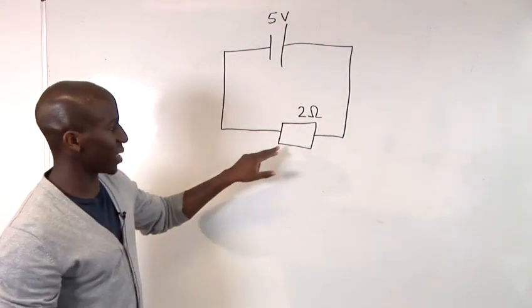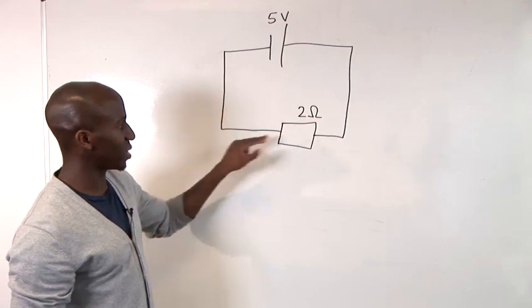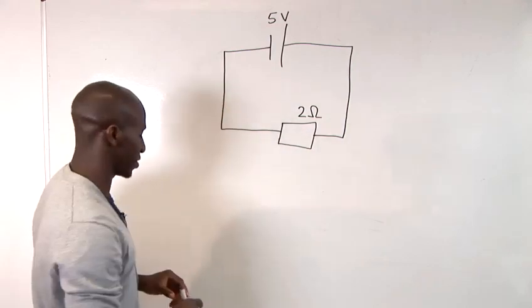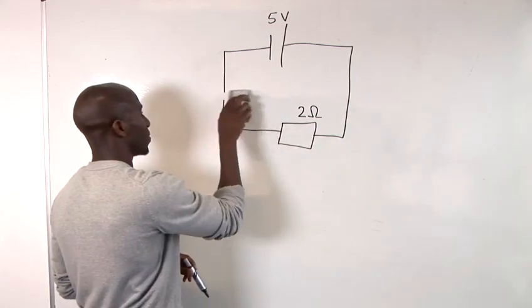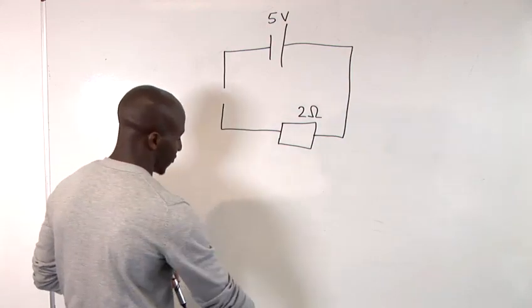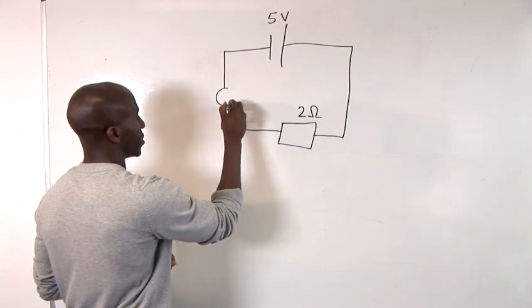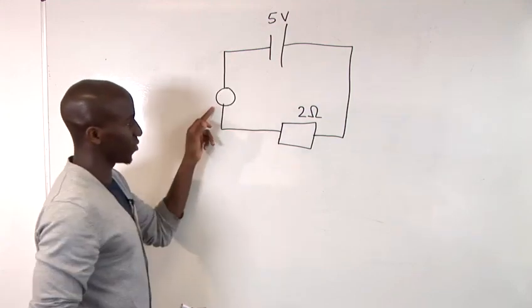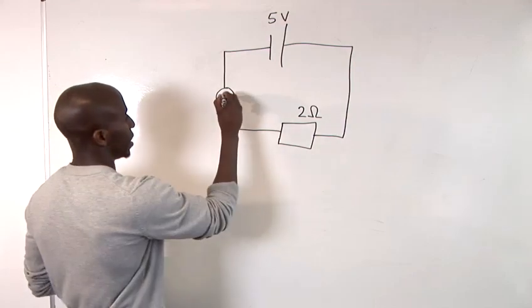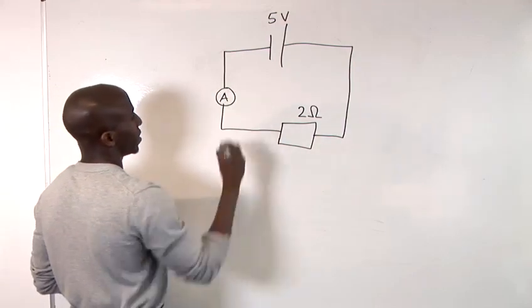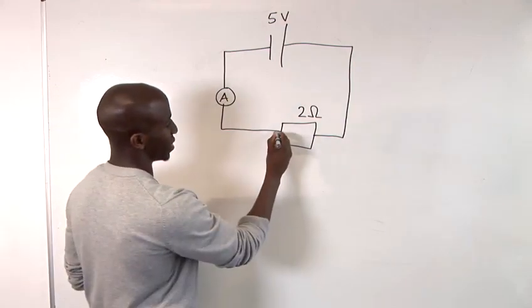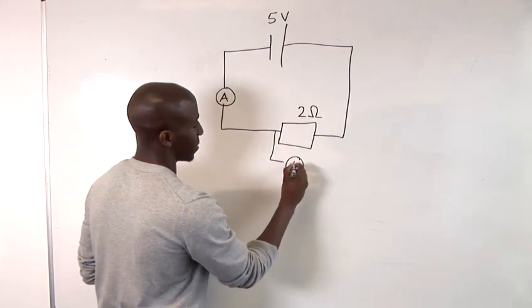We now want to calculate the current that goes around in this circuit. Within your current, you'll find that whenever you're drawing where you would find your ammeter, it would occur like this, as opposed to a voltmeter, which goes around like that.